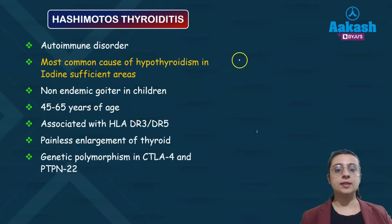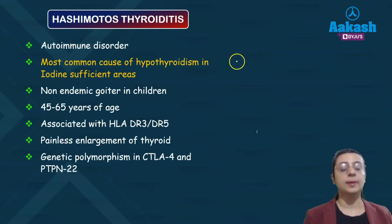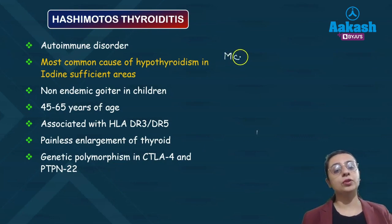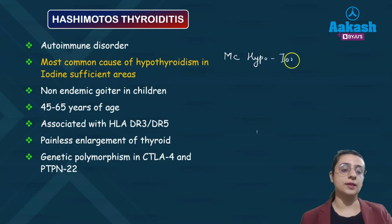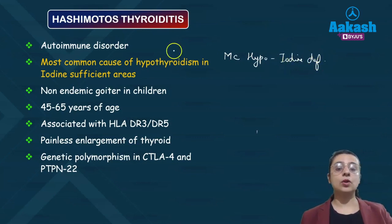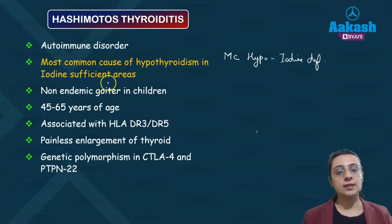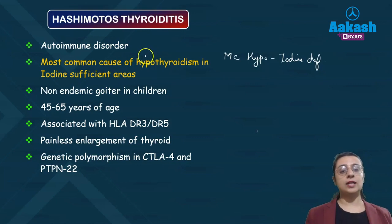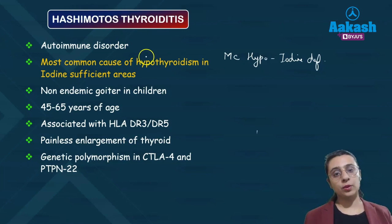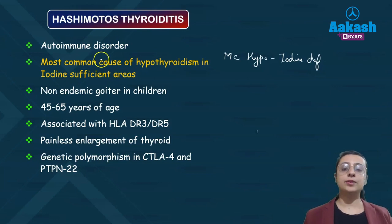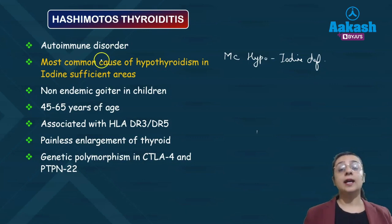Thyroid diseases can be due to hypothyroidism or hyperthyroidism. The most common cause of hypothyroidism in iodine-sufficient areas is Hashimoto's thyroiditis, which is an autoimmune disorder. Because it is autoimmune, it is associated with other autoimmune diseases such as type 1 diabetes and SLE.